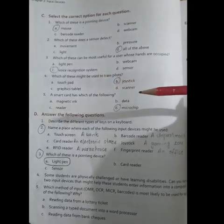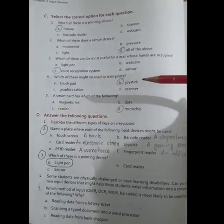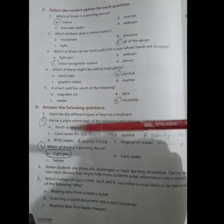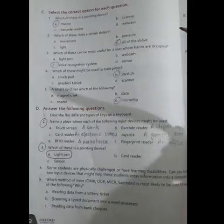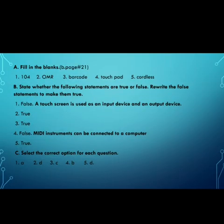Number four: which of these might be used to train pilots? Number five: a smart card has which of the following — magnetic ink, data reader, or microchip? The correct option is microchip. This is the book work which you have solved in the book.